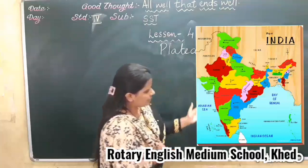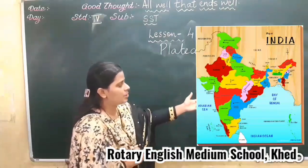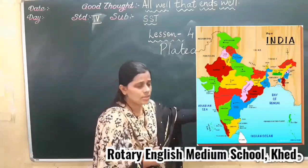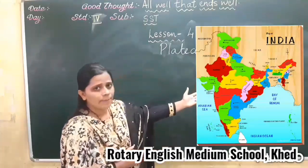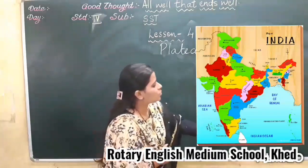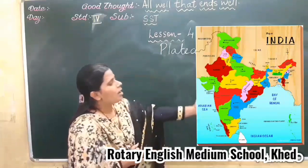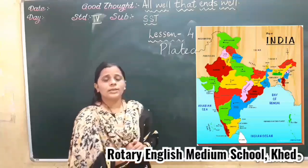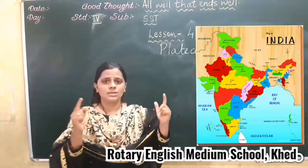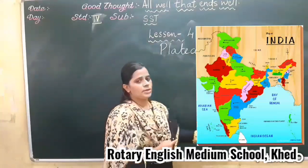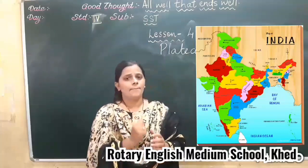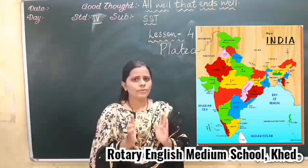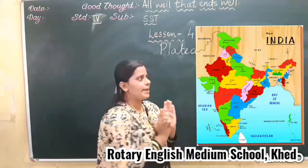Which water bodies surround it? You can see in the picture. It is surrounded by the Arabian Sea in the west, the Indian Ocean in the south, and the Bay of Bengal in the east. The land masses which are surrounded by three water bodies is known as peninsular.